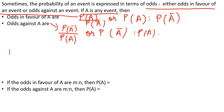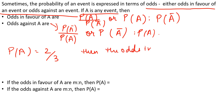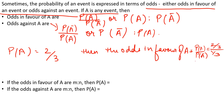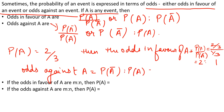For example, suppose the probability of A is 2/3. Then the odds in favor of A equals P(A) / P(A') = (2/3) / (1/3) = 2 : 1. And the odds against A equals P(A') / P(A) = (1/3) / (2/3) = 1 : 2. So these are the differences between odds in favor and odds against.